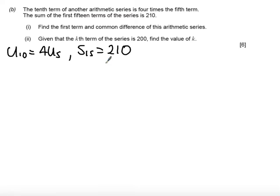So now we want to find the first term and the common difference of this arithmetic series. The way we're going to do this is I'm going to form two equations, so simultaneous equations, in a and d using these two separate bits of information. First of all,